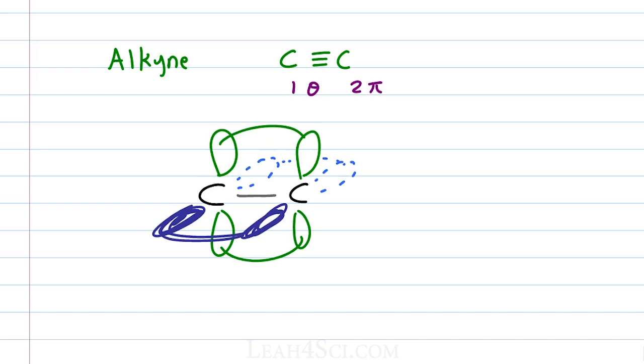Carbon having 4 orbitals, saving the y and z p orbitals for pi bonds, we're left with just 1s and 1p that fuse together making the alkyne an sp hybrid, making the alkyne a linear molecule with a 180 degree bond angle due to the sp hybridization.